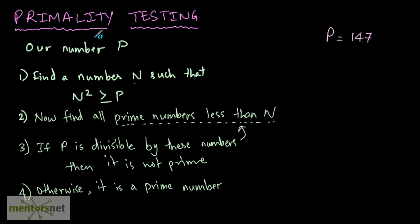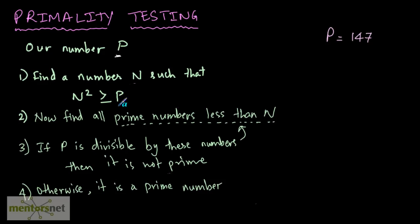Let's move on to our next topic which is primality testing — how do you determine whether a number is prime or not? You have to follow these 4 steps in order to determine this. Let's do this with an example. I have the number p, and the number p is 147. The first step says: find a number n such that n² is greater than or equal to p. We have to find one such number whose square is greater than p. Let's find such a number, starting from 10.